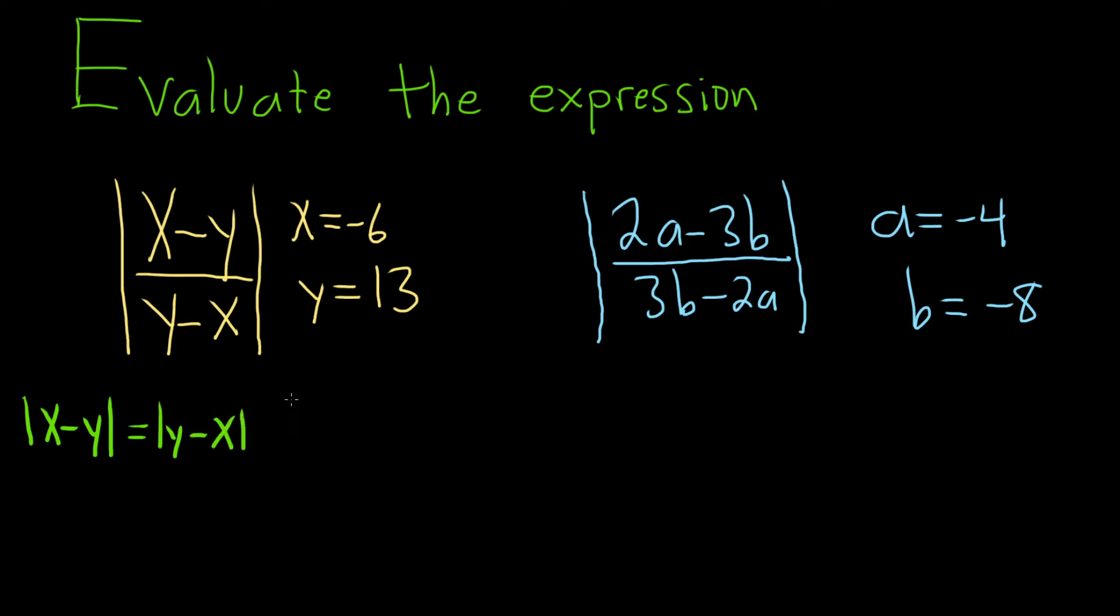In this first example, we can take the absolute value of the top and then take the absolute value of the bottom. That's a property of absolute values.